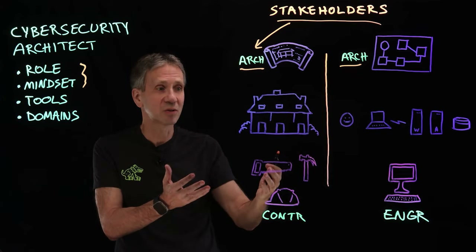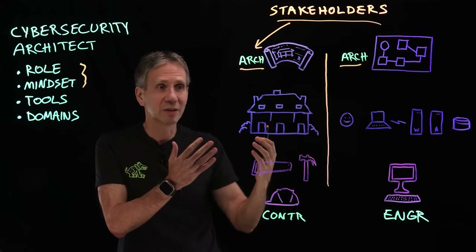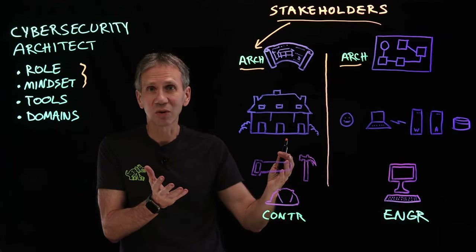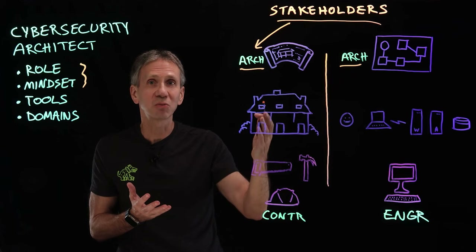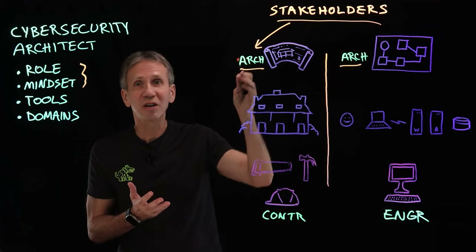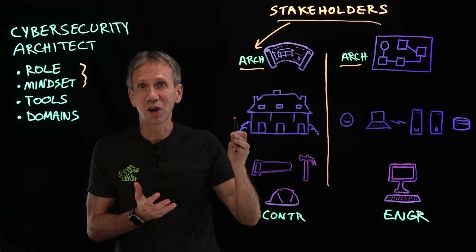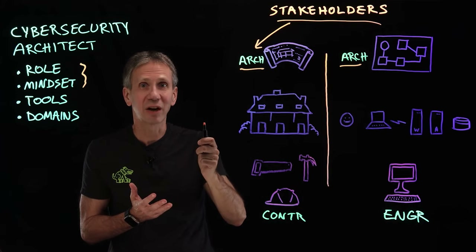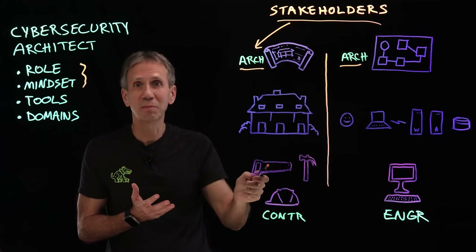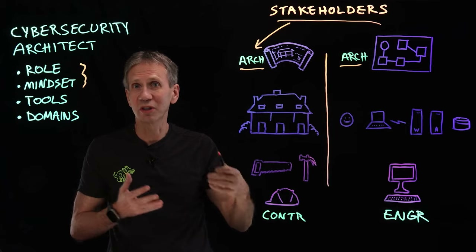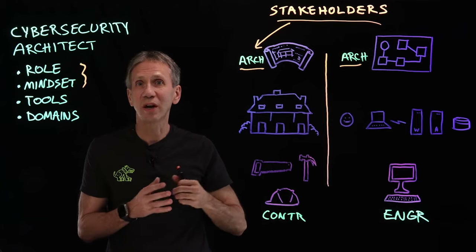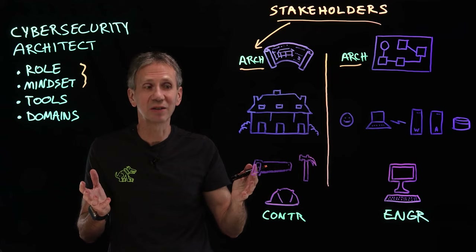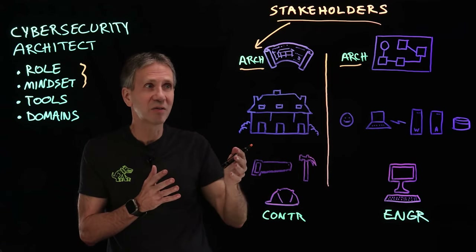That blueprint then becomes the plan that the contractors come along and implement. We've got contractors who are plumbers and carpenters and things of that sort — they're going to be the ones that do the actual implementation. If the architect shows up on the job site with a hammer in hand, you might be in trouble, because that's not their area of expertise. You want the people who are experts in doing, and the architects who are experts in planning and coming up with the big ideas.